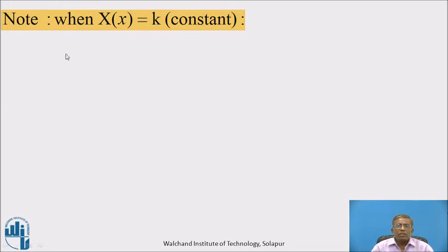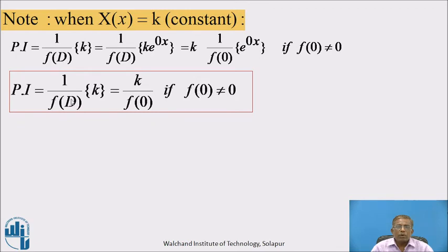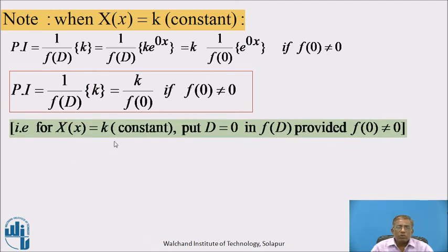Note: when X(x) is a constant, PI = 1/f(D) · k = 1/f(D) · [k · e^(0·x)] = k · 1/f(0) · e^(0·x), if f(0) ≠ 0. So PI = k/f(0). That means for a constant function X(x) = k, to find the particular integral, put every D equal to 0 in f(D), provided f(0) ≠ 0.